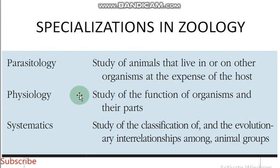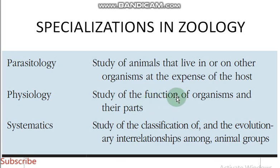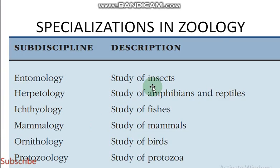Physiology is the study of the functions of organisms and their parts — here we study the functions of entire whole organisms. In systematics, we study the classification and evolutionary interrelationships among animal groups.